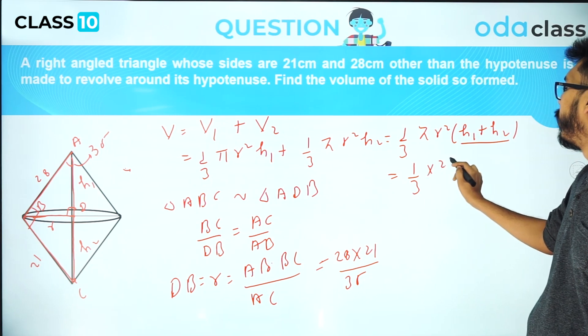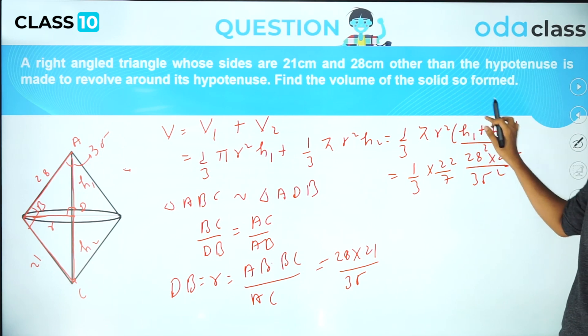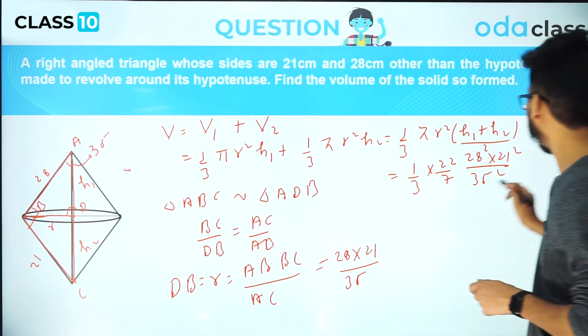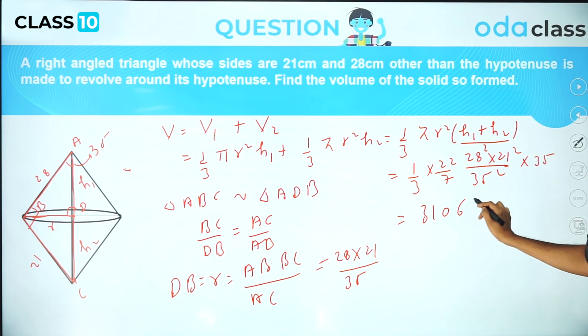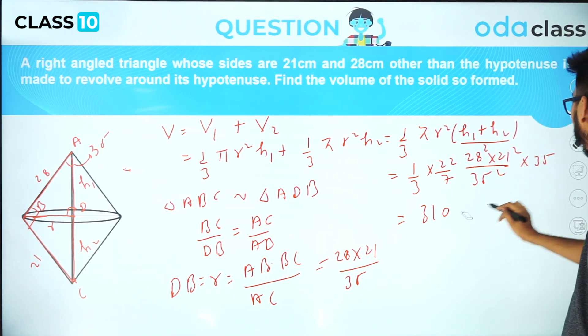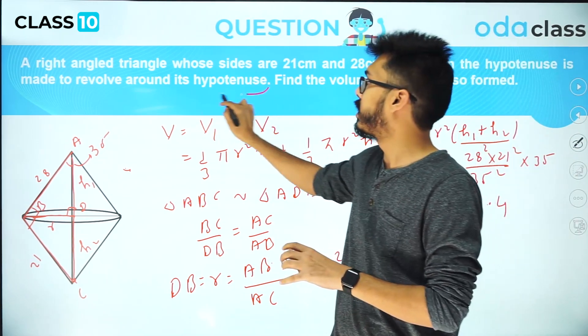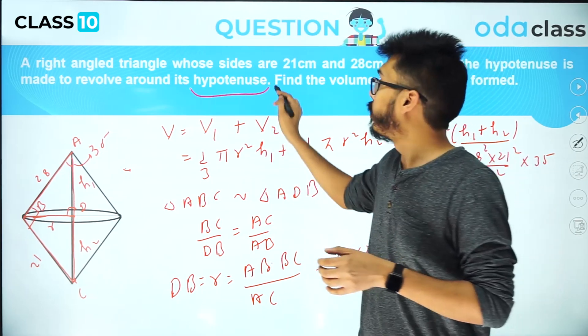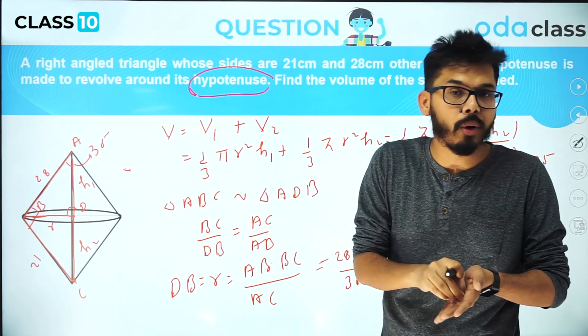You get 1/3 π which is 22/7 into r², so you get 28² × 21² divided by 35², and h₁ + h₂ is 35. If you simplify this you will get 31064.4, or 31046.4. This is how you solve the first problem related to volume of a cone, which was little bit twisted because we were revolving the whole triangle with respect to hypotenuse, not with respect to perpendicular side.